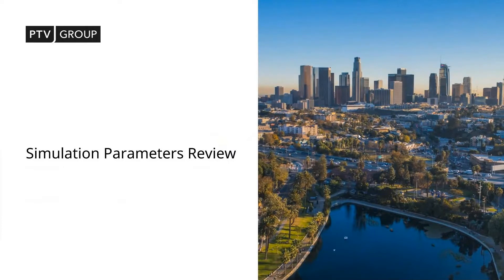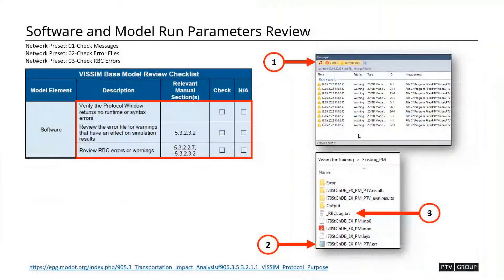The first thing we're going to do is jump into the simulation parameters review. We're going to look at whether the scope of the simulation is set up correctly. Specifically, we're going to check for any errors or warnings in our model, as well as look at some of the error files that we may have.